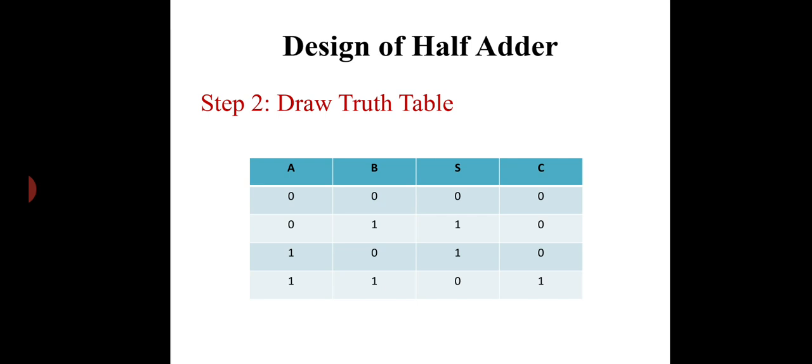Now, just look at the truth table. When the input A is 0 and B is also 0, there will be no sum and no carry. Therefore, S will be 0 and C will be 0. For the second case, when A is 0 but B is 1, there will be generation of sum but carry is 0. Therefore, I have sum as 1 and C as 0.